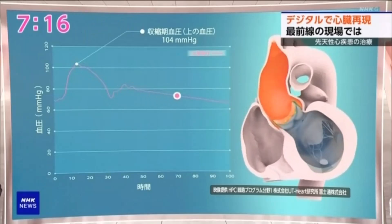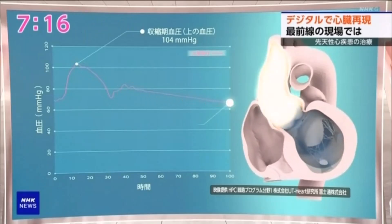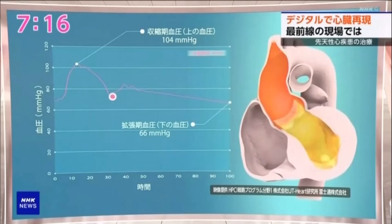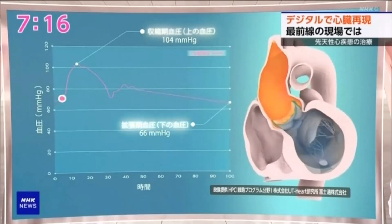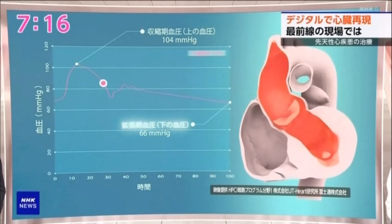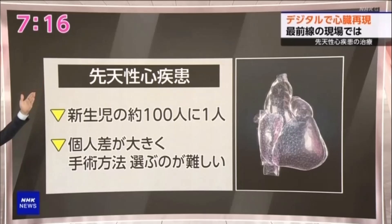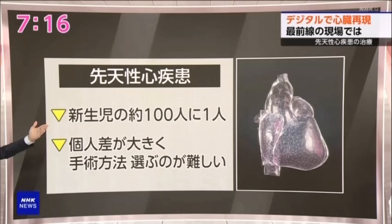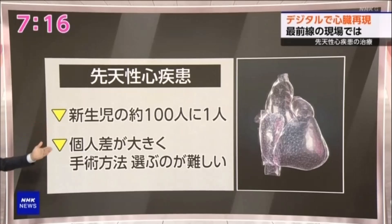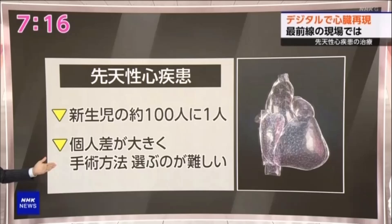Last year, the clinical trials were completed and development is progressing with the goal of practical use. The purpose of this simulator is to treat congenital heart disease, where the structure of the heart is abnormal from birth. It is found in about one in a hundred newborns, and the abnormalities vary greatly between individuals, making it extremely difficult to choose the appropriate surgical method.